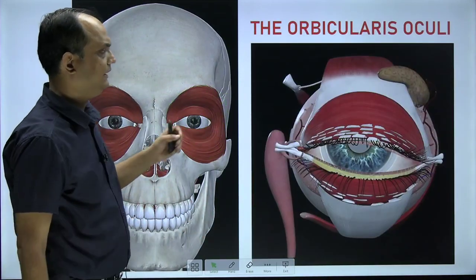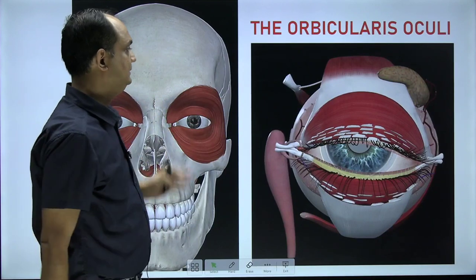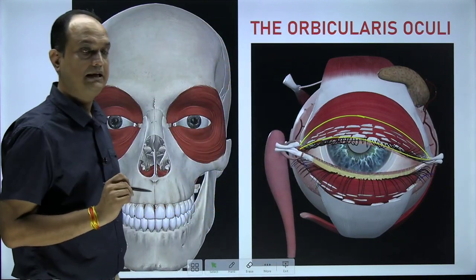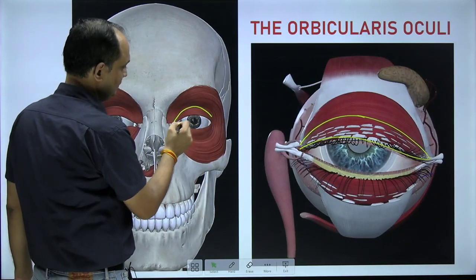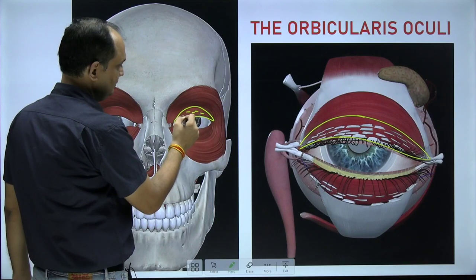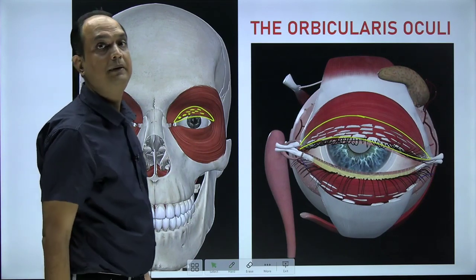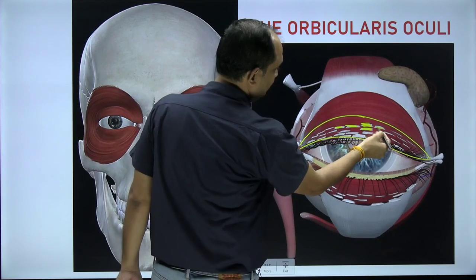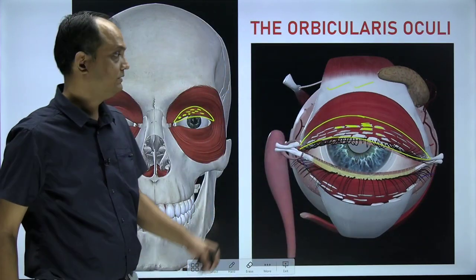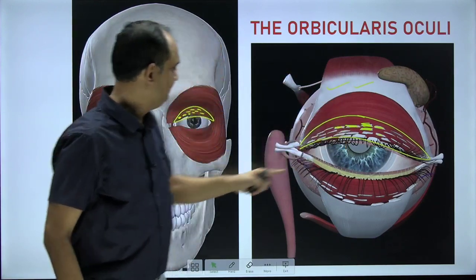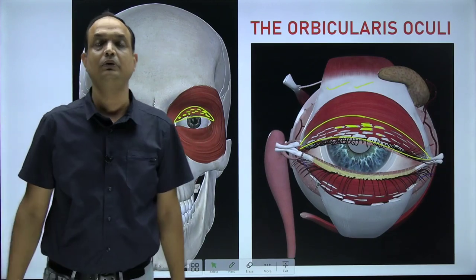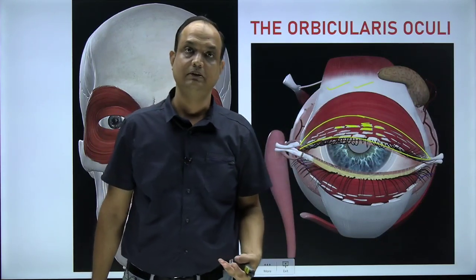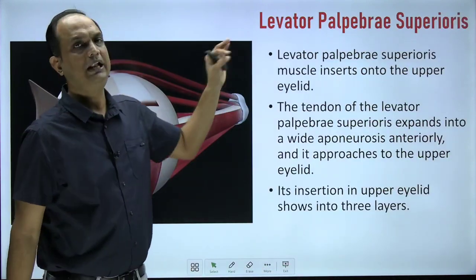The palpebral part of orbicularis oculi is pierced by fibers from the deeper levator palpebrae superioris. The aponeurosis of levator palpebrae superioris pierces through orbicularis oculi and inserts anteriorly into the dermis of the upper eyelid skin. This is an important concept for understanding the dissection layers of the upper eyelid.